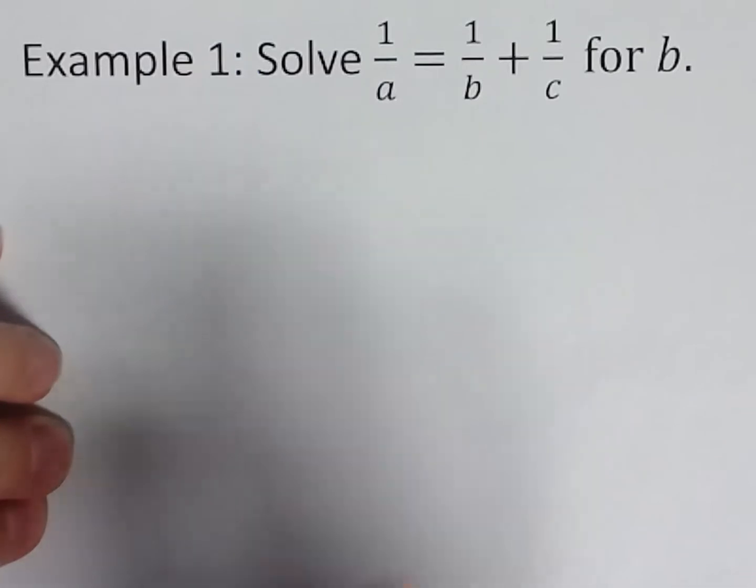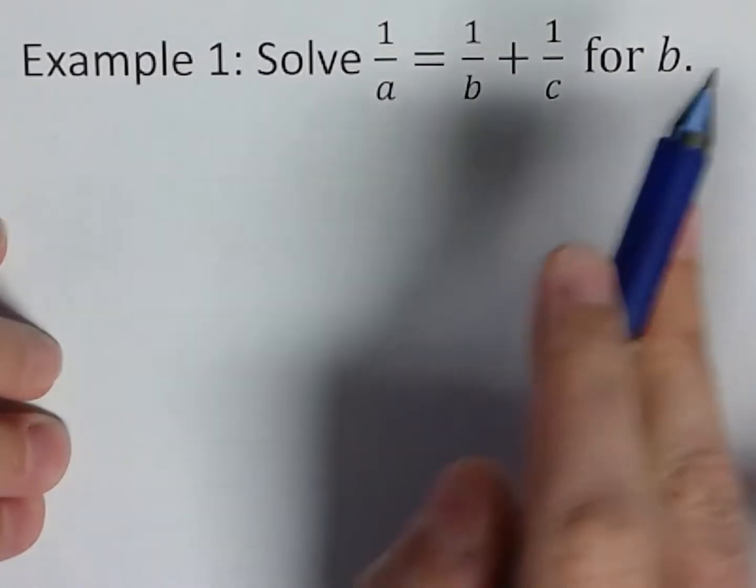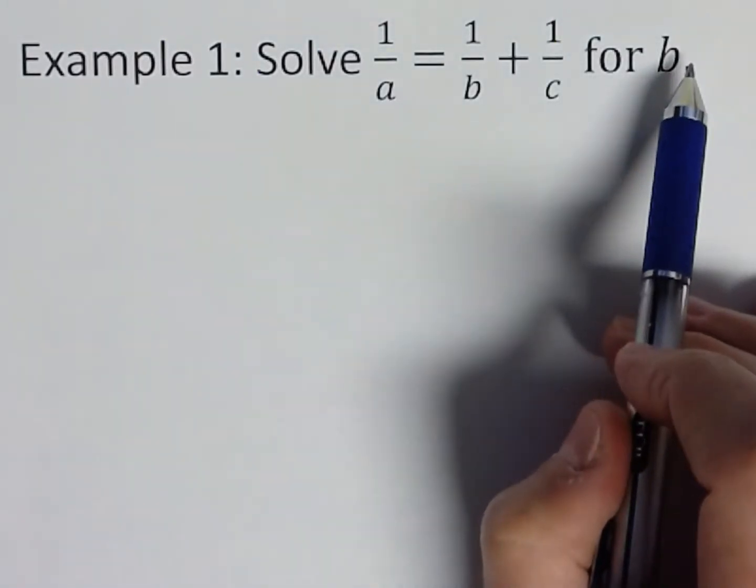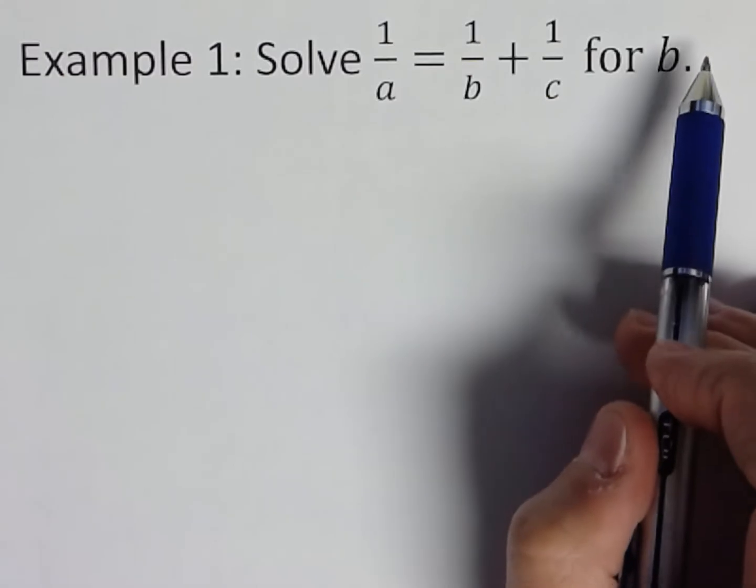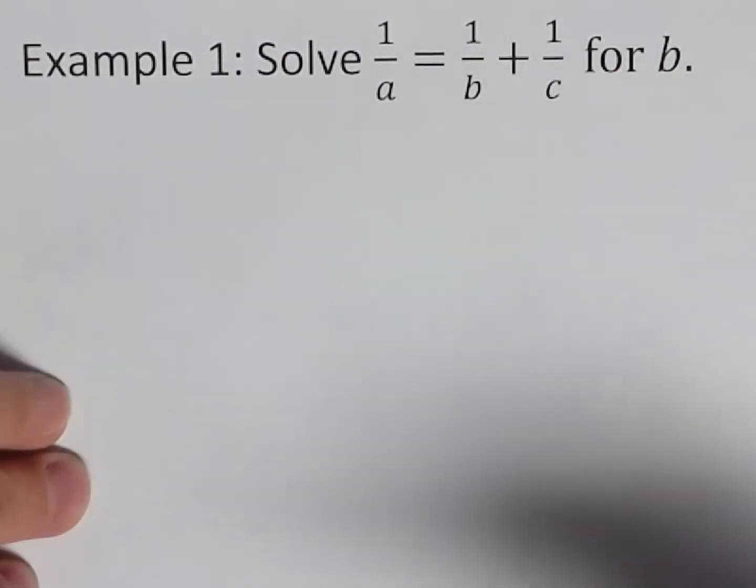Now this one is a very general expression, so we've got multiple variables in it. All they want us to do is isolate B. So we want B equals stuff, that's our goal. Now it looks intimidating, but really not too bad. Kind of follow what I'll show you, and you can use this to solve any equation like this.